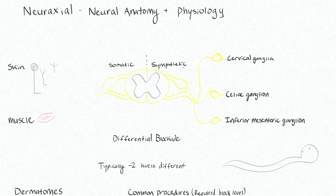We'll start by talking about the sympathetics. Your sympathetic nervous system is a branch of your autonomic nervous system, and you have various sympathetic ganglia that send and receive information to and from various nerve roots. The cervical ganglia — there are actually three of them, the superior, middle, and inferior — will transmit their information through nerve roots T1 to T4.